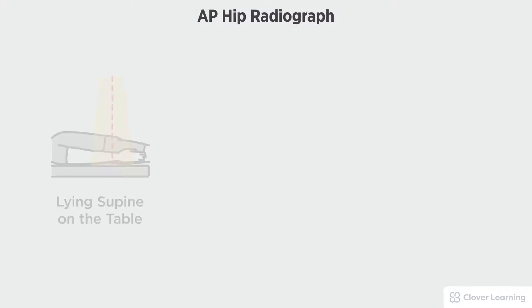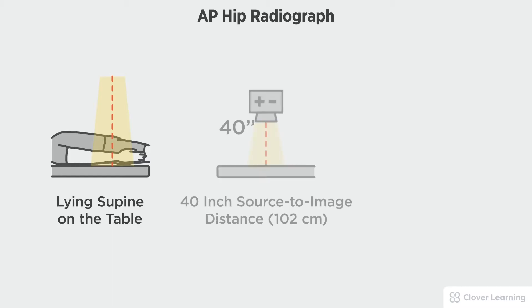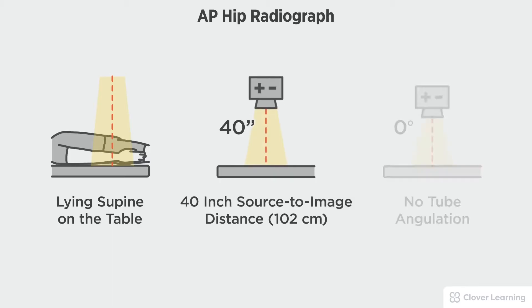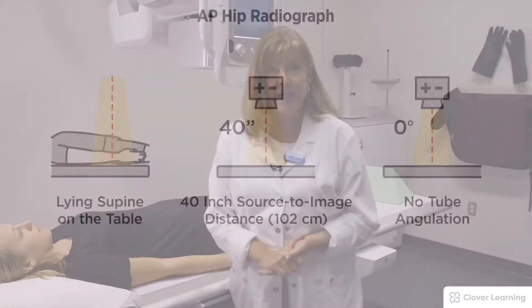In this view we will be demonstrating the AP hip. The AP hip should be performed with the patient lying supine on the table with a 40 inch source to image distance and no tube angulation.